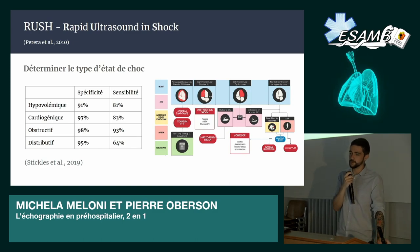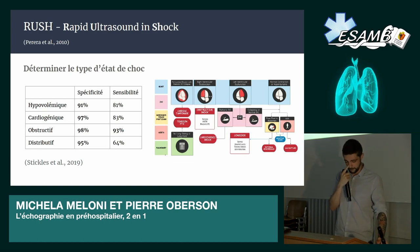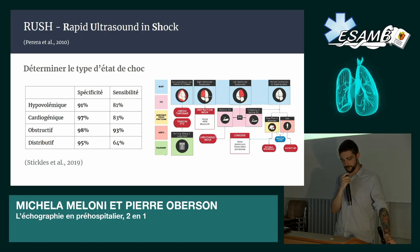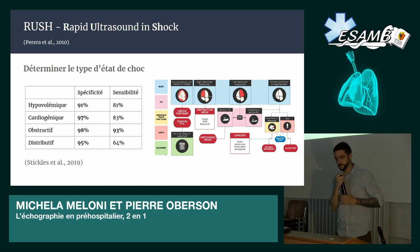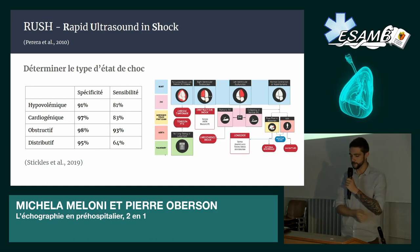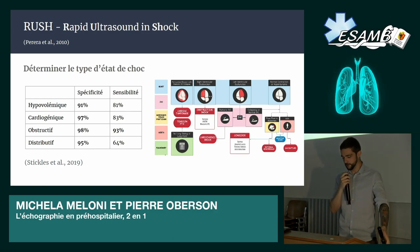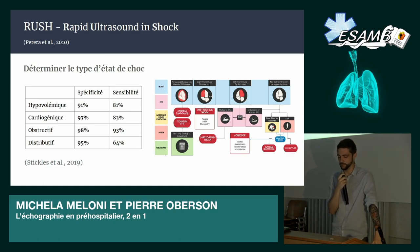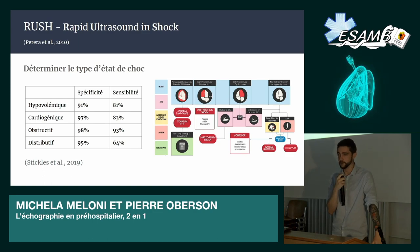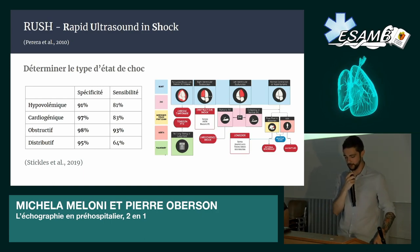Ça a un impact sur nos patients : on ne prend pas en charge de la même façon quelqu'un qui est en état de choc cardiogénique ou obstructif, ou même distributif. En plus de ça, ce protocole a l'avantage de donner vraiment une image d'ensemble du patient. On va pouvoir voir s'il y a un FAST inclus à l'intérieur, s'il y a des fluides libres dans l'abdomen, un anévrisme aortique, un pneumothorax — ça permet vraiment d'avoir la vue d'ensemble et de déterminer les menaces vitales.